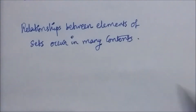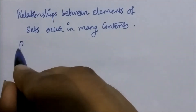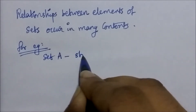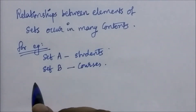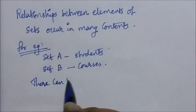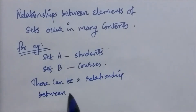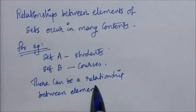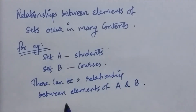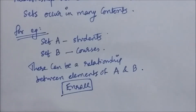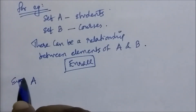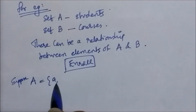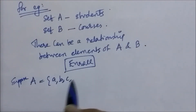For example, consider set A as a set of all students and set B as a set of all courses. There can be a relationship between the elements of set A and set B. The relationship here is 'enrolled' — students of some college or school can be enrolled in some courses. So 'enroll' is a relationship connecting these two sets.